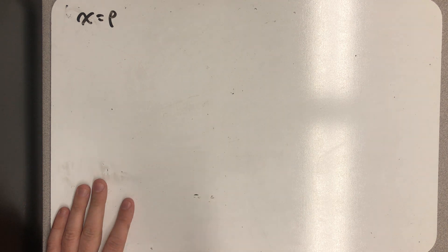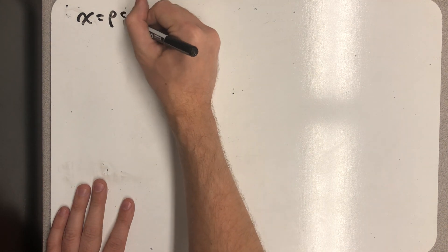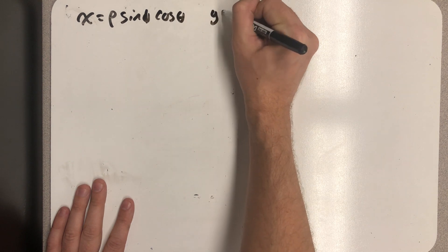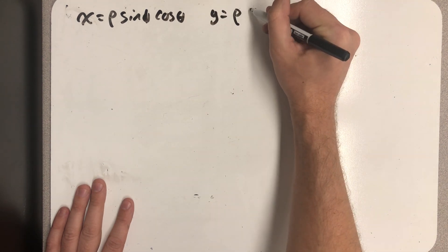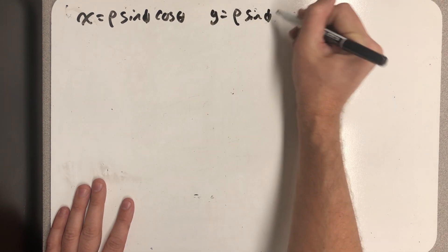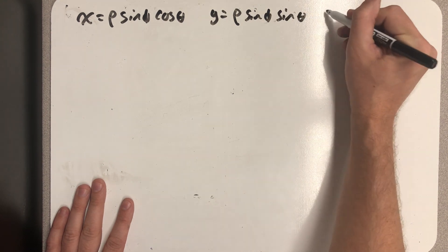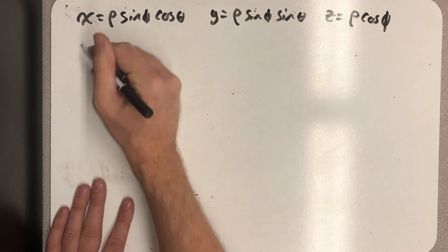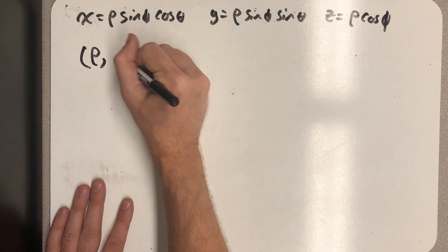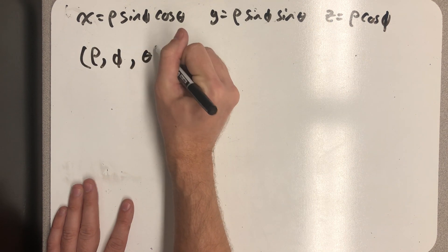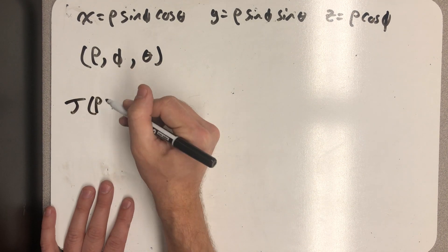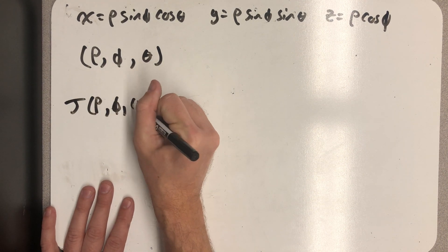So I know to go from rectangular to spherical coordinates, I would use this substitution, where my new variables are rho, phi, and theta. And so I'll calculate a Jacobian J of rho, phi, and theta.